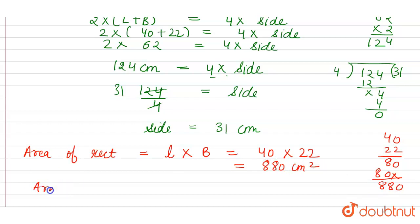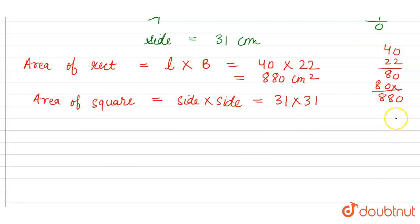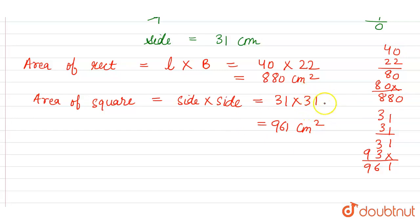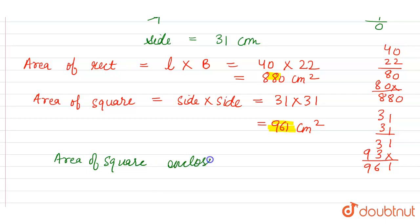Now the area of the square — the formula is side into side, and we have calculated the side as 31 cm. So it is 31 into 31. Doing the multiplication: 1 into 1 is 1, 1 into 3 is 3, 3 into 1 is 3, 3 into 3 is 9, giving us 961 cm square. Now comparing: 961 is greater than 880, so the square encloses more area.